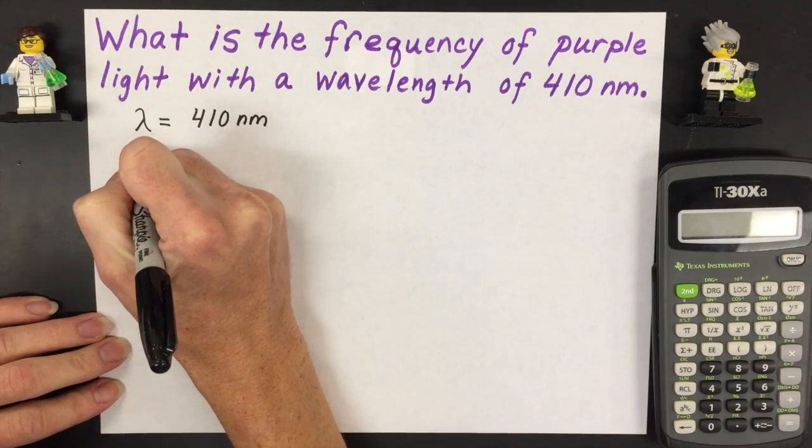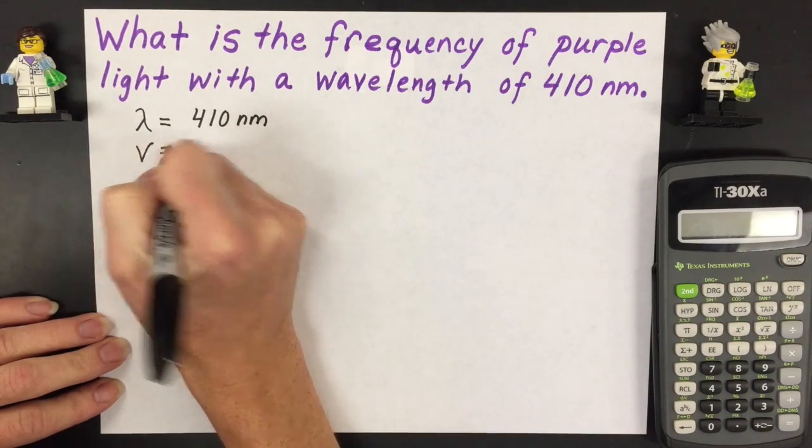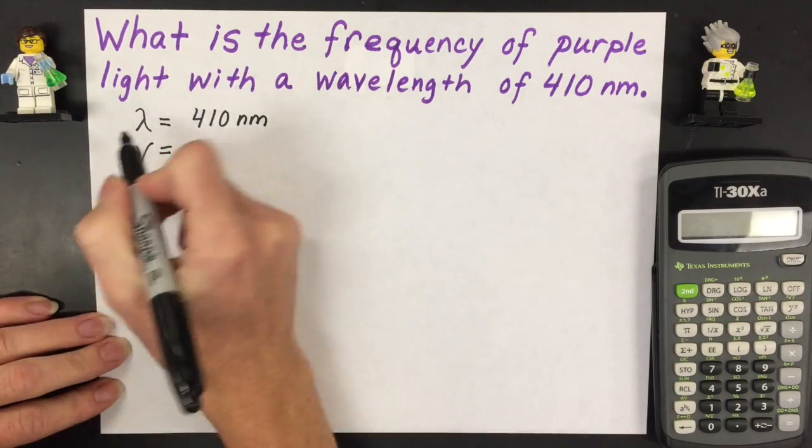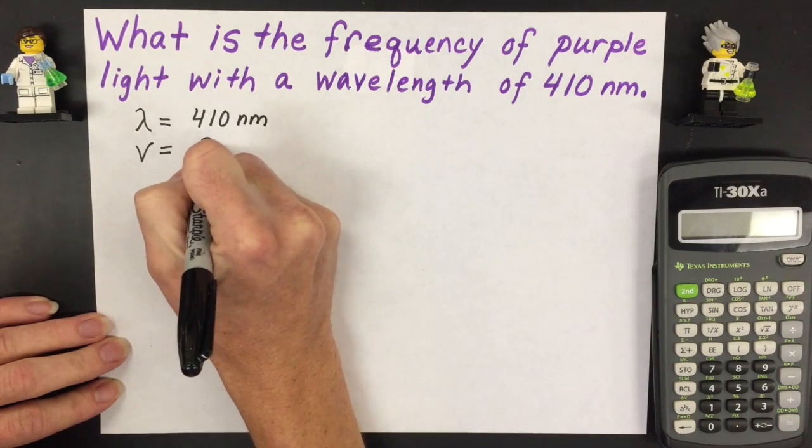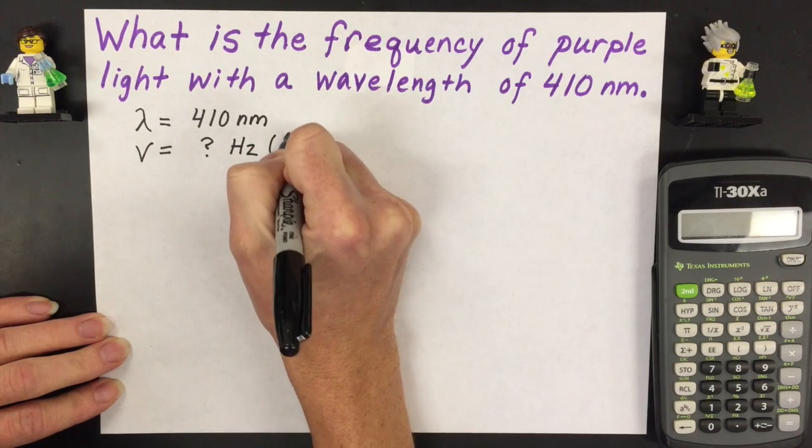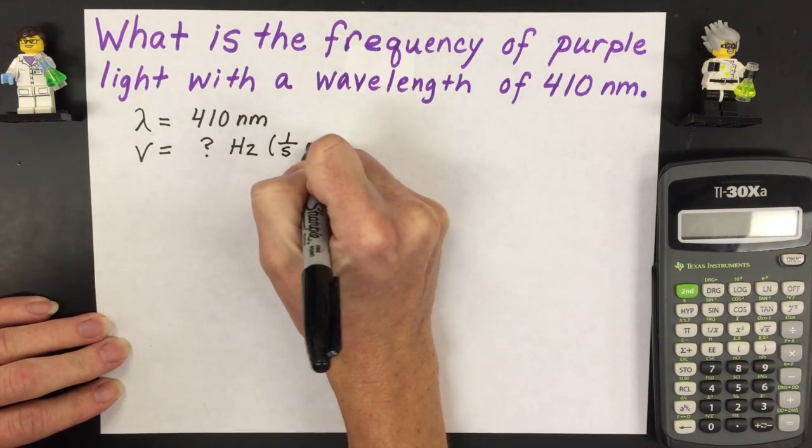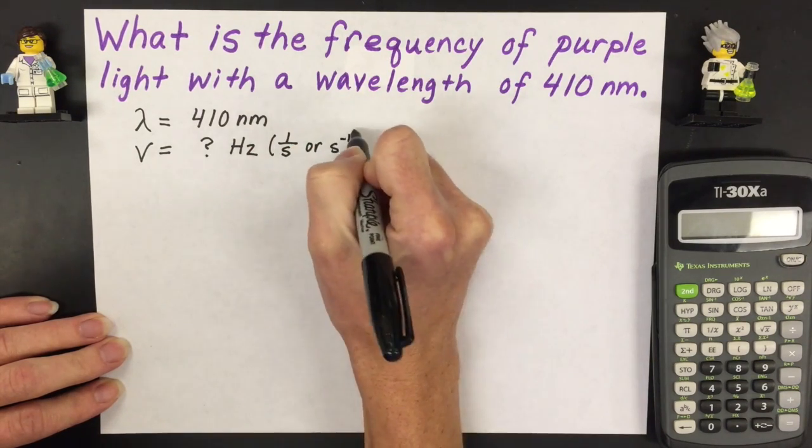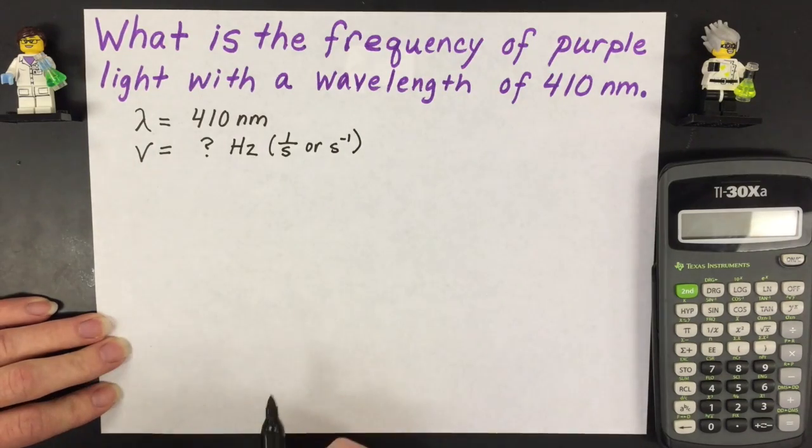We also want to solve for frequency which is nu and that is our question mark and that is going to have the units of hertz or per second is the same thing or you can write it as second minus one. All of those are identical to each other.